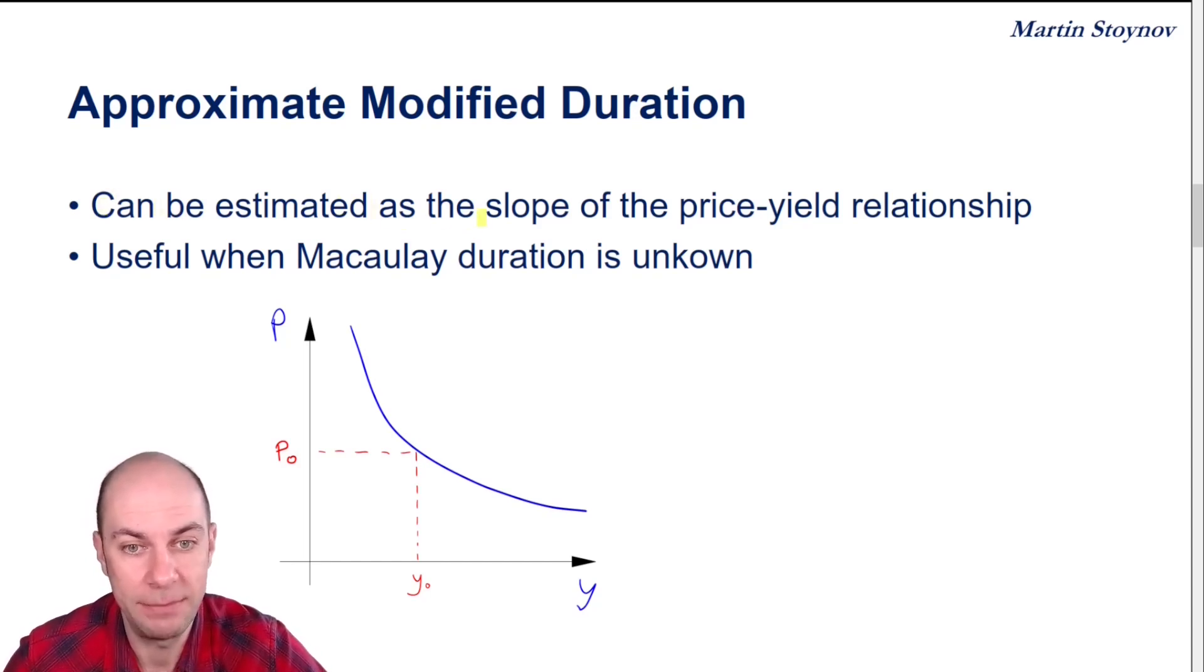So first of all, this can be estimated as the slope of the price-yield relationship. For example, at this point here, if I've got Y0 as my current yield and P0 as my current price,